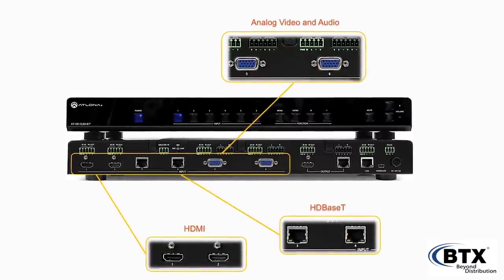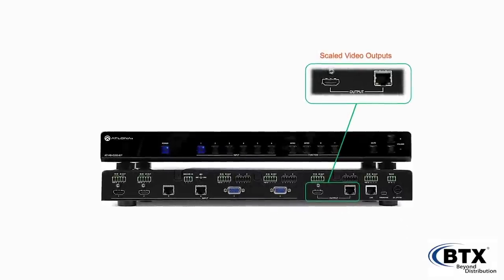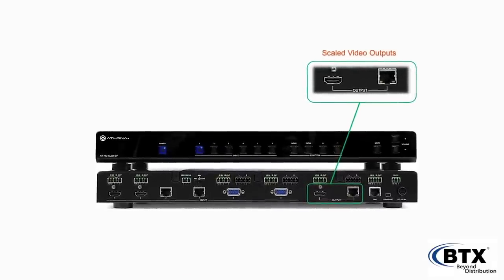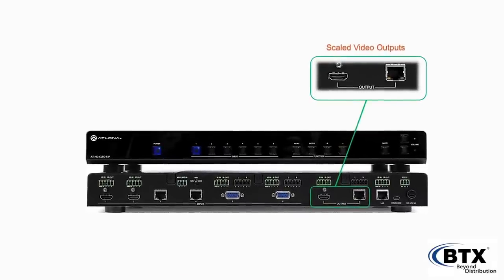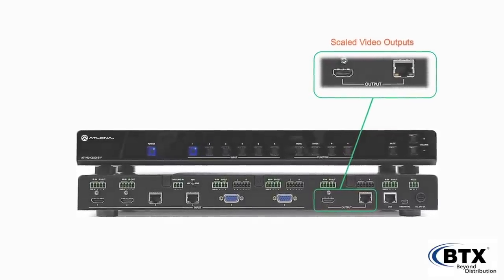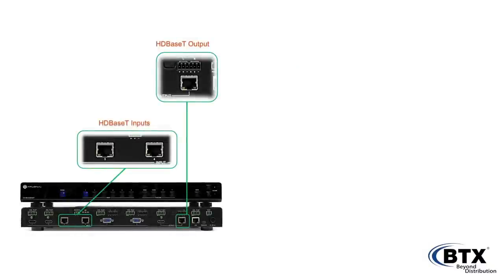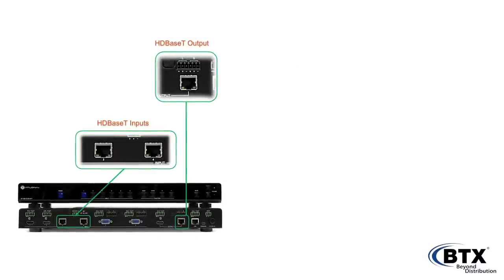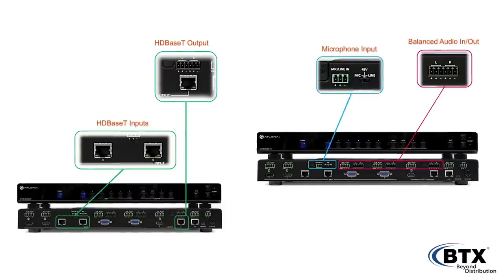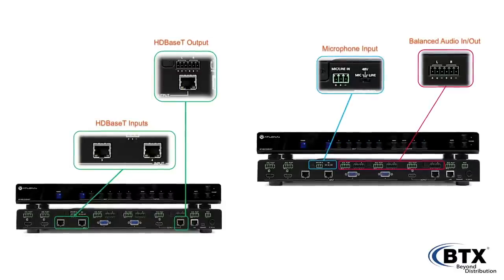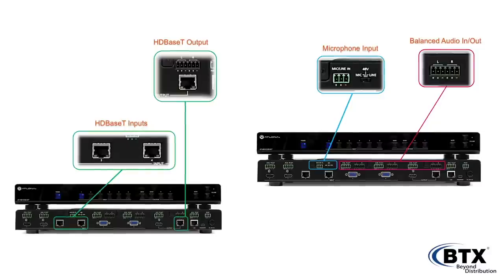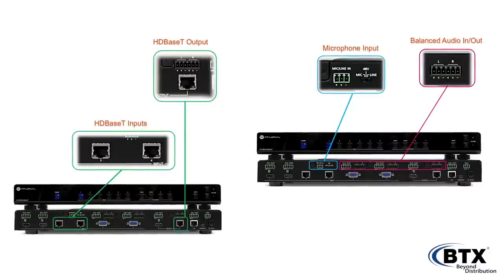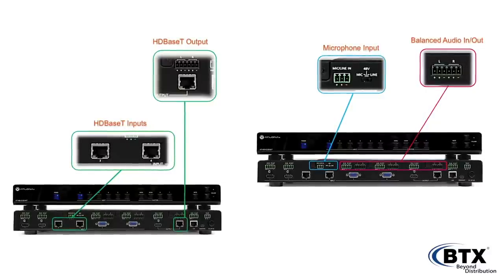As for outputs, the CLSO 612 offers one HDBaseT port with one mirrored HDMI port. This unit supports HDBaseT specifications for signal distribution up to 230 feet or 70 meters. In addition, the CLSO 612 offers microphone input with internal mixing, decreasing background audio volume when the mic is in use.